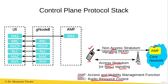So, we have the NAS signaling — or the NAS protocol — between the AMF and the user equipment, and we have the RRC protocol between the gNB and the user equipment in the access network.